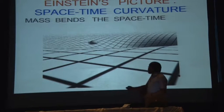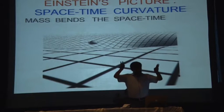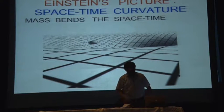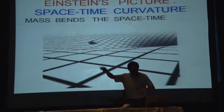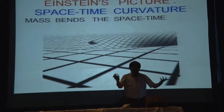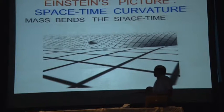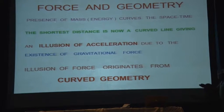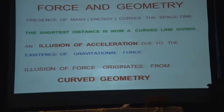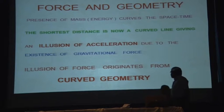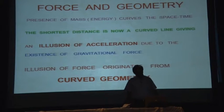For the first time in science, we understand what mass is: mass is that which changes the geometry from flat to curved. In a curved space, you have to travel in a curved path, so the acceleration is natural — there is no force. The presence of mass or energy curves space-time, and the shortest distance is now a curved line, giving an illusion of acceleration due to the existence of a gravitational force. This illusion of force originates from curved geometry.